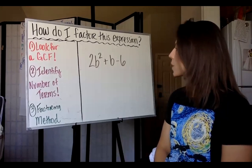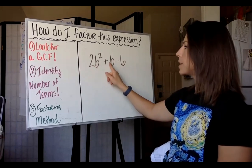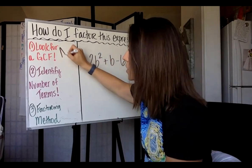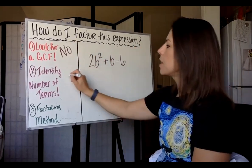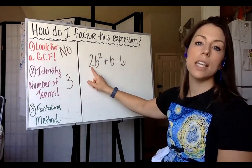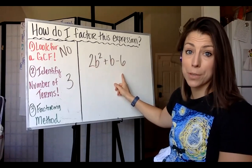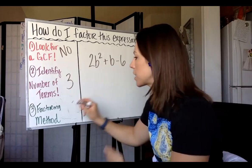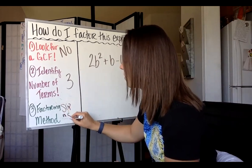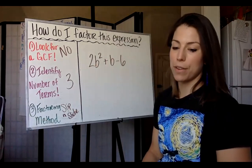Our next example is 2B squared plus B minus 6. First step: look for a GCF. The leading coefficient of B is 1, so 2 does not go into every term — there is no GCF. There are three terms, so we check trinomial factoring methods. There is a leading coefficient, which means we cannot use P's and Q's. 2 and 6 are not perfect squares, so this is not a perfect square trinomial. That leaves us with slip and slide as our factoring method.